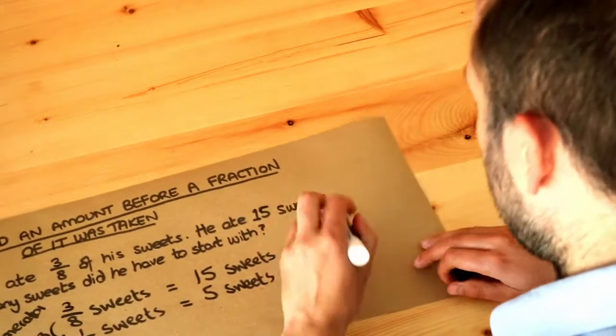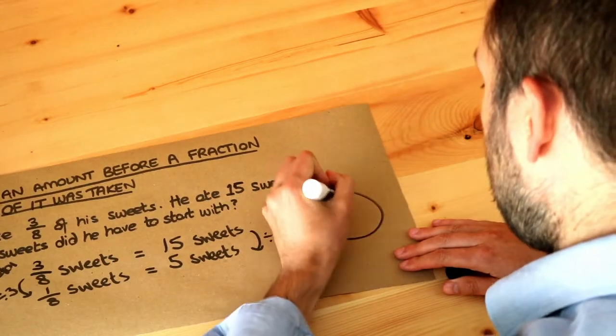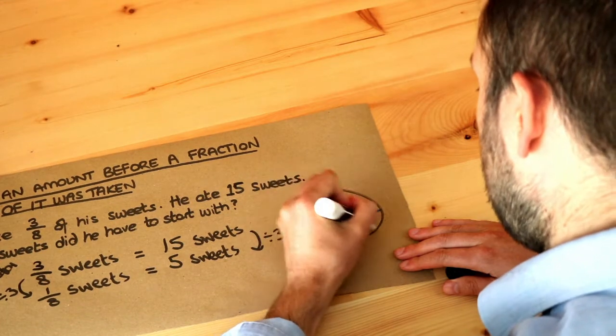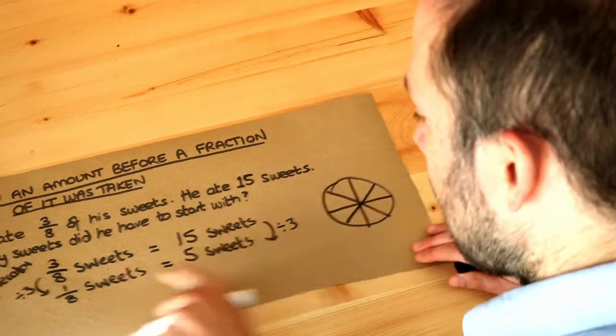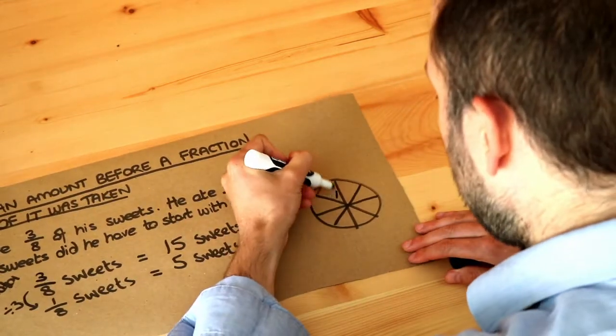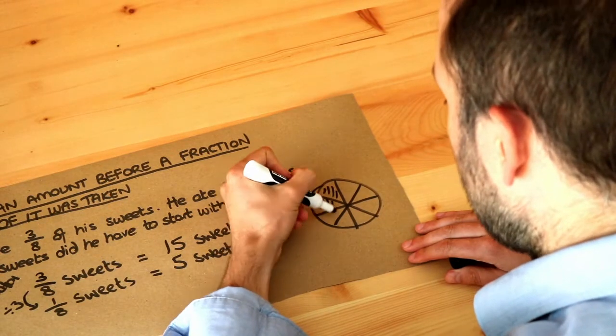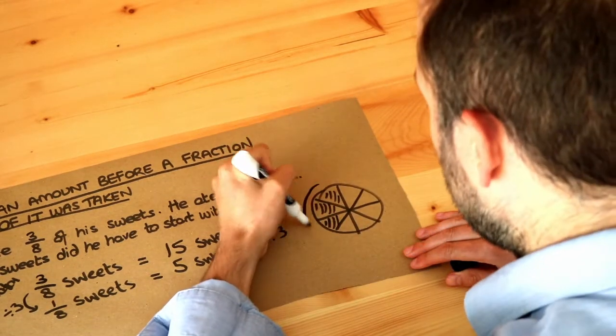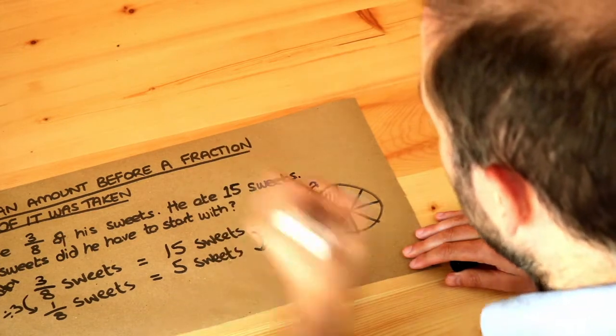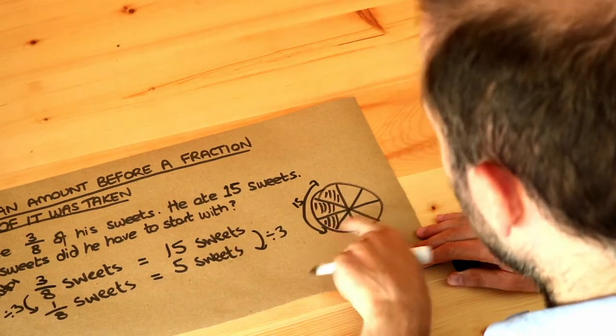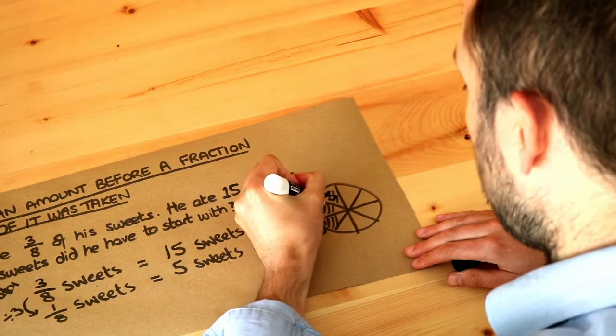If I was to do this diagrammatically, if I had say a kind of pie chart like this and he ate three eighths of his sweets, that's three eighths and that's worth fifteen sweets, then we can see that each slice, each eighth, is going to be worth five sweets.